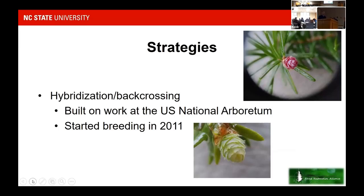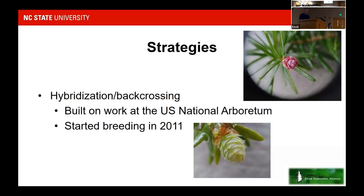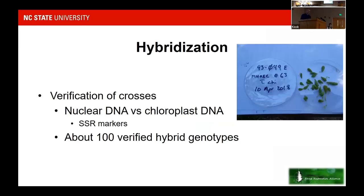Ben discusses the different strategies used to develop resistant hemlocks for reforestation, noting this is work done with the Forest Restoration Alliance. The ultimate goal is producing trees suitable for restoration, but there are also intermediate goals of producing things suitable for industry — basically restoring some of the income lost in North Carolina due to HWA impacts on the nursery industry. Some work doesn't go directly to a restoration product but is a stepping stone on that path.